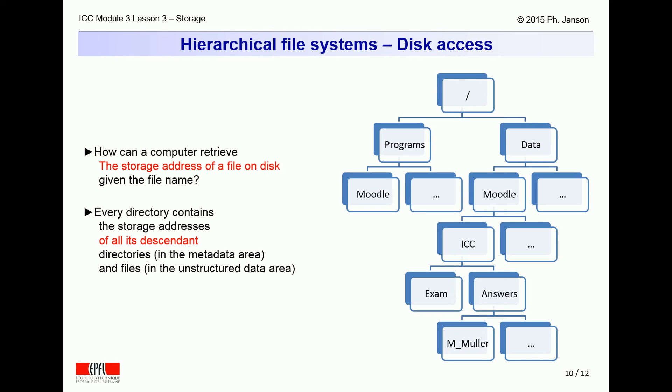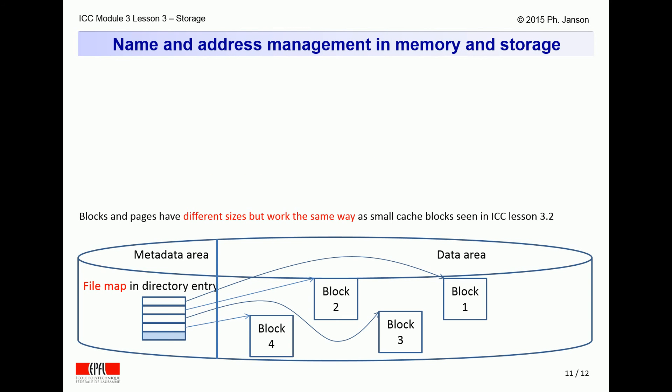Remember that each disk contains a structured metadata area and an unstructured data area. The data are the real file contents. The metadata are the directories themselves. Every directory contains the storage address of all its descendant directories in the metadata area and descendant files in the unstructured data area. The list of the addresses of all the blocks of a file is called the file map. While a file resides in storage, its file map is saved in the directory entry for that file in the storage metadata area.